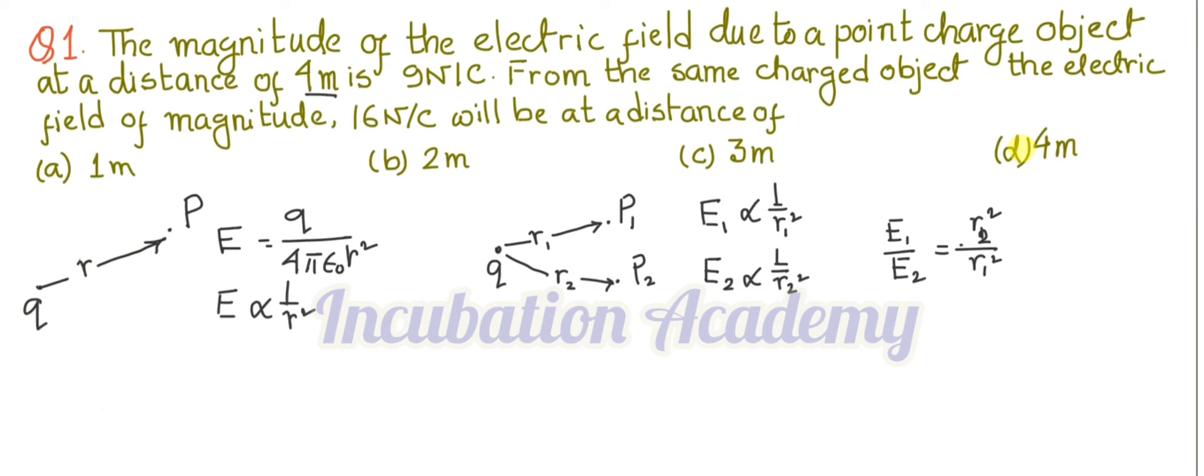When the distance is R1 for the first case, R1 is equal to 4 meter. At that time, the electric field E1 is 9 Newton per Coulomb.